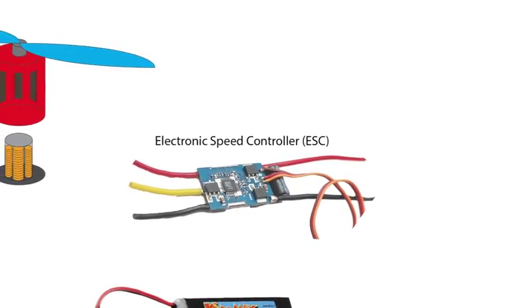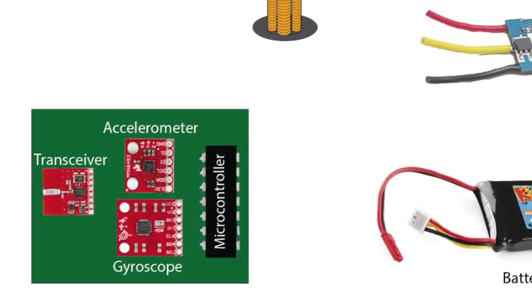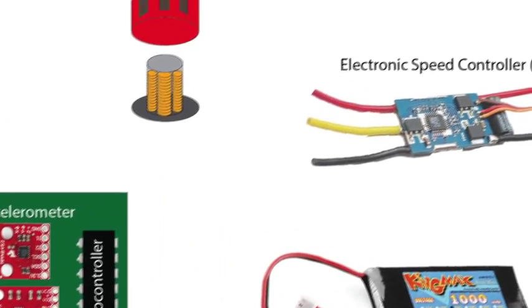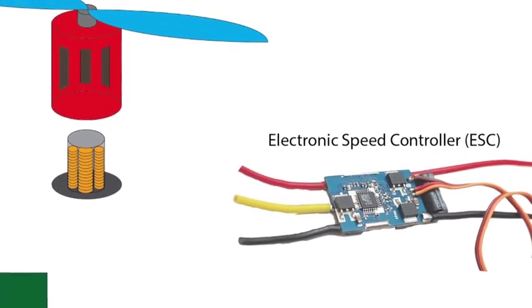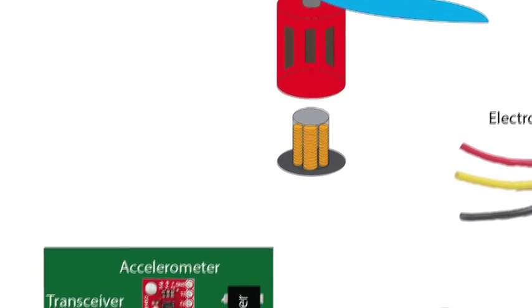The speed controllers determine the speed that the motors rotate based on an input signal from the microcontroller on the quadcopter. They are responsible for charging the different parts of the electromagnet quickly enough and in the right order to cause the motor to rotate.